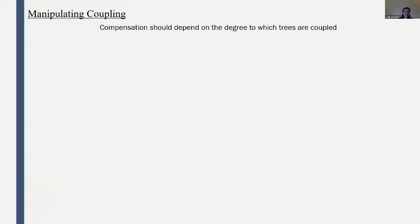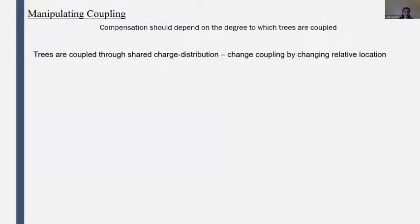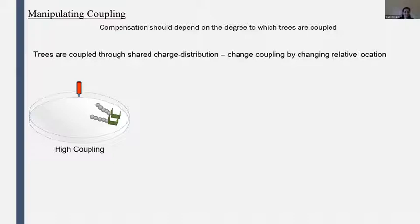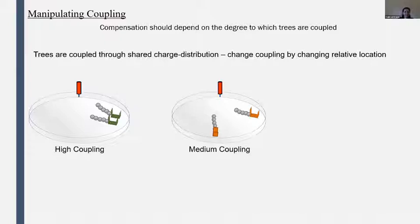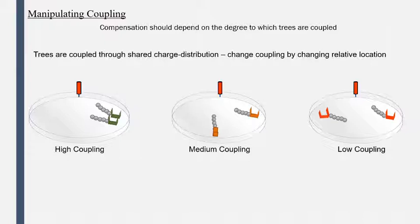We also included a manipulation of the coupling level, because we expect that the magnitude of compensation from tree two should depend on how tightly coupled the trees actually are. The trees are coupled through the shared distribution of charges on the oil, and we can change the degree of coupling by changing the degree to which they are pulling charges from the same region of the charge distribution. In the high coupling condition, they are roughly side by side. In the medium coupling condition, they are further apart, oriented at 90 degrees. And in the low coupling condition, they are opposite each other and further apart still.